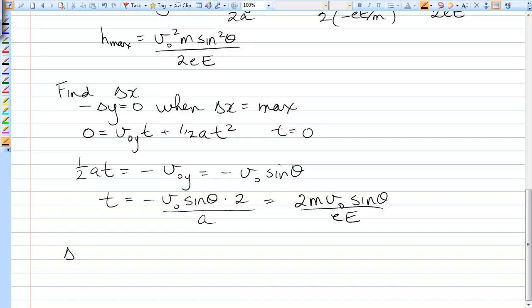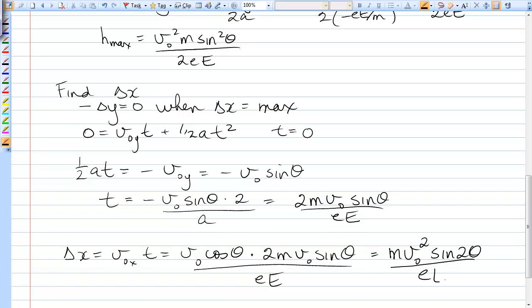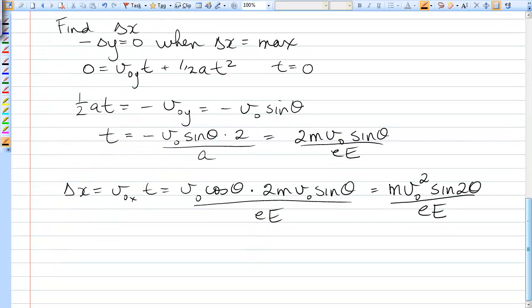So we can sub that into delta X. Delta X is V0X times T at any time. At that specific time, I've got V0 cos theta times 2M V0 sin theta over eE, which equals M V0 squared sin 2 theta over eE. That's the final answer. I've used the identity that 2 sin theta cos theta equals sin of 2 theta.